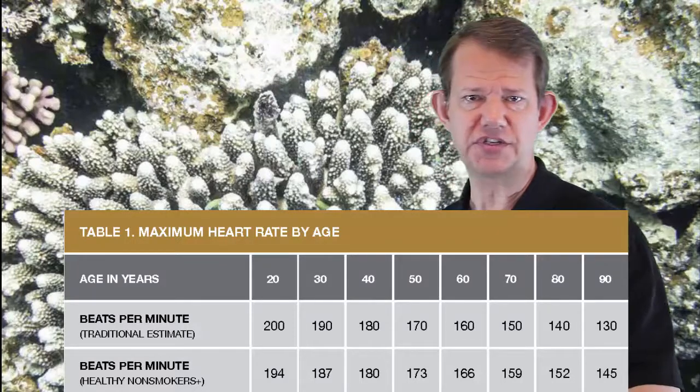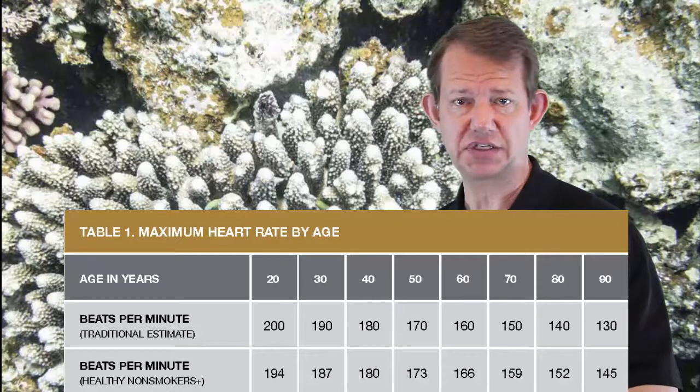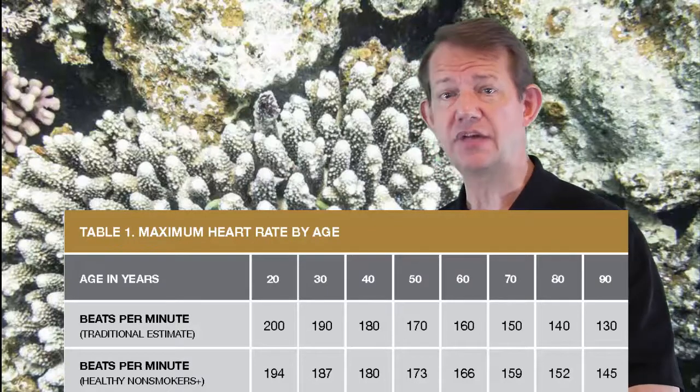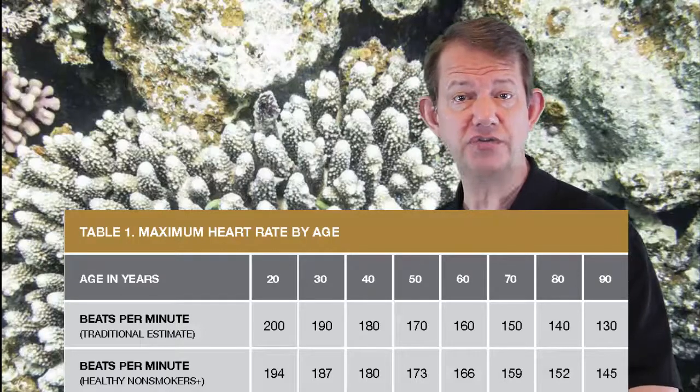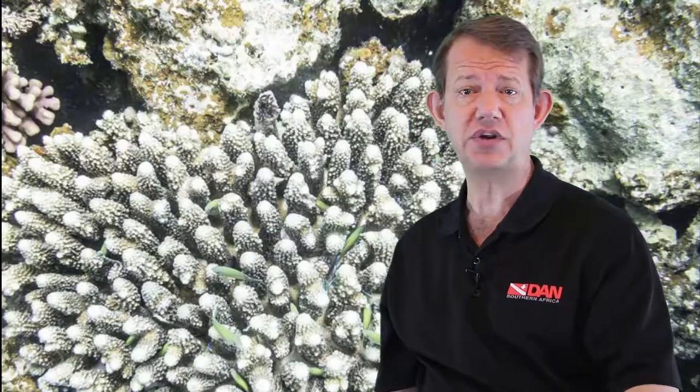The autonomic nervous system also changes with age. Normally, the parasympathetic component sets the level of the heart rate at rest, while the sympathetic component governs the heart in anticipation of and in response to physical activity, stimulating a timely and appropriate increase in blood flow to support that activity.